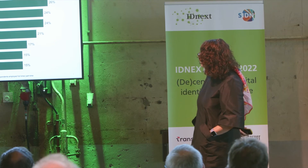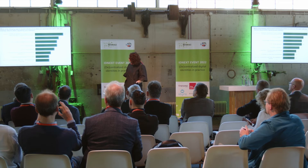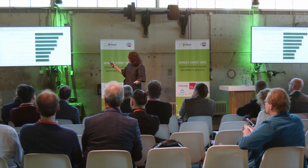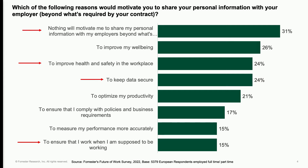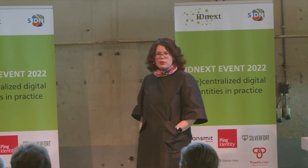The health and safety number was higher during COVID because employees understood their employer was trying to protect them and needed to share more health-related data to develop a safe environment. You'd expect to see that number declining and indeed it has. To keep data secure also came in at 24%, which is noteworthy because data security is one of the understood exceptions to certain kinds of employee privacy regulations.